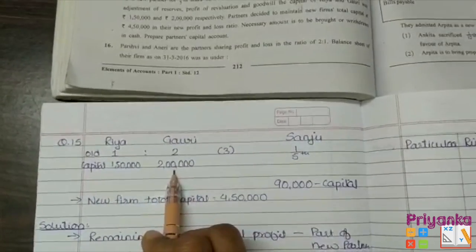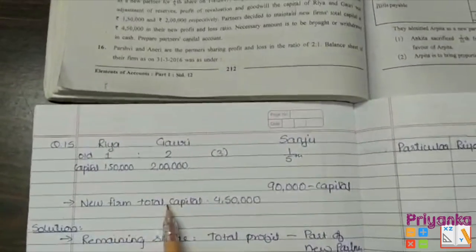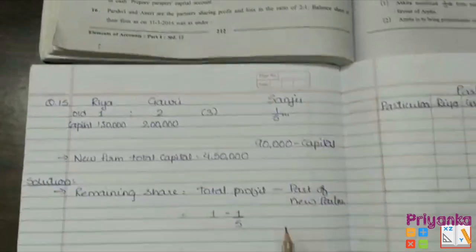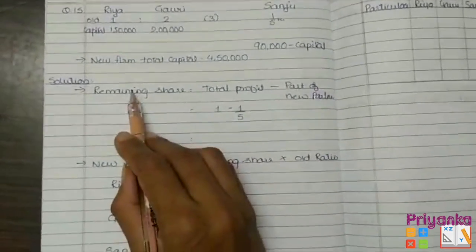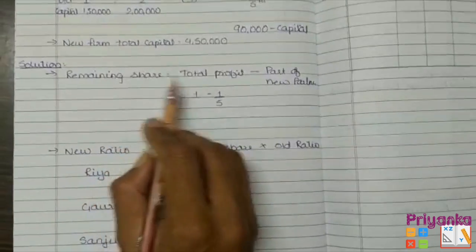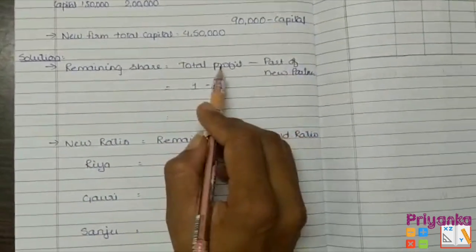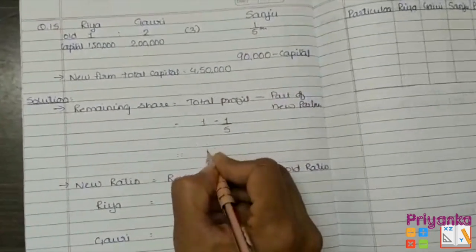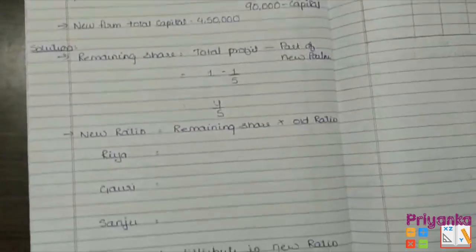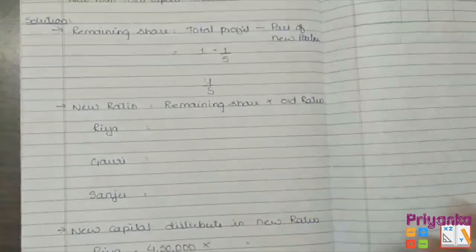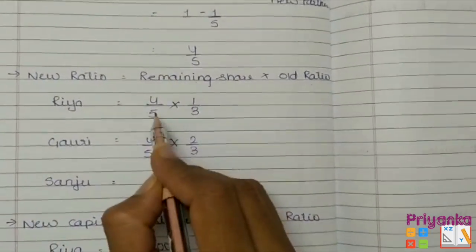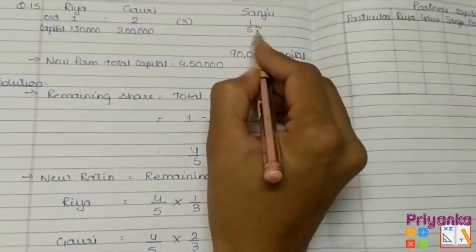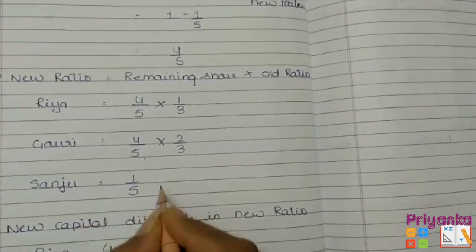The new firm's total capital is 4,50,000, which has to be distributed among three partners in their new ratio. The formula is: remaining share equals total profit minus part of new partner. The total profit we assume as 1 and the part of the new partner is 1/5. If you find the LCM, you get 4/5. For the new ratio, take remaining share multiplied by old ratio. The remaining share is 4/5 for both partners, and for Sanju we keep 1/5.